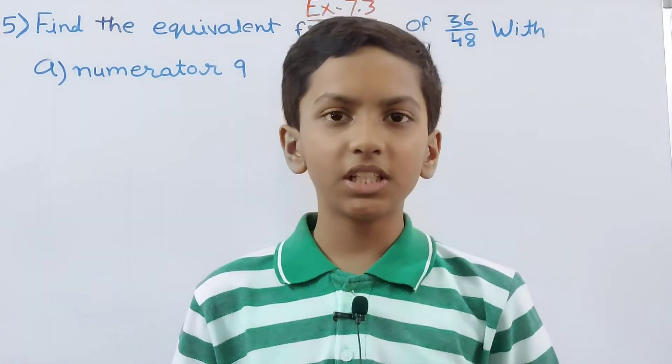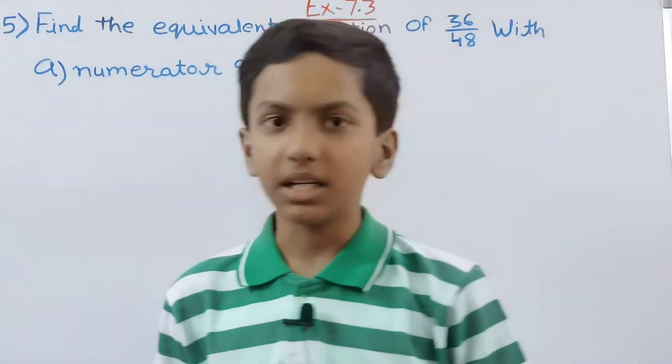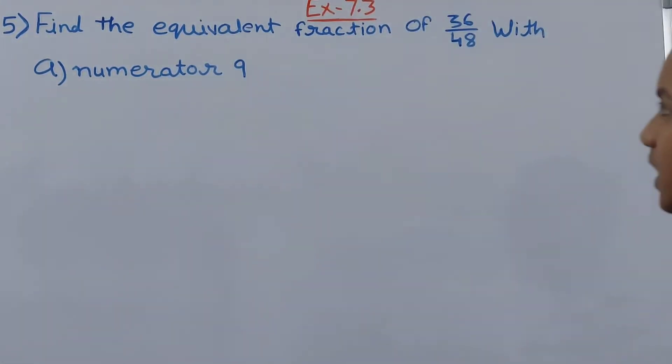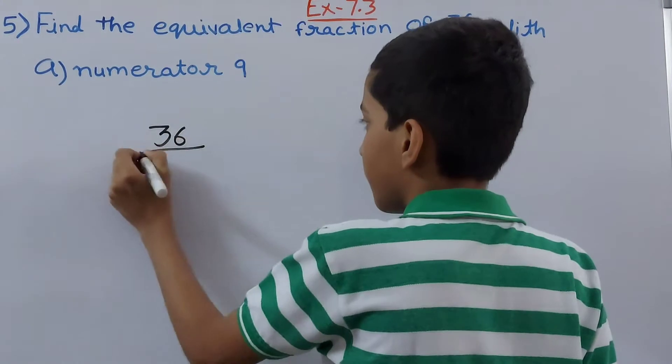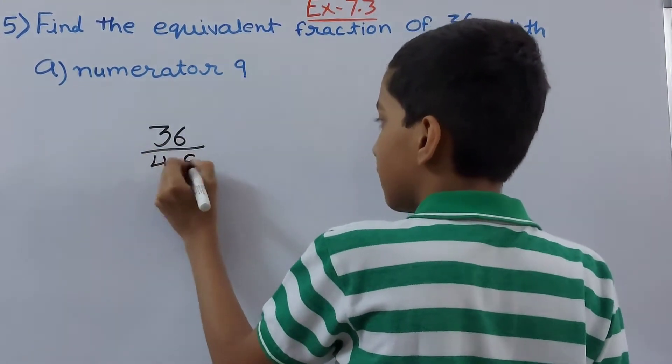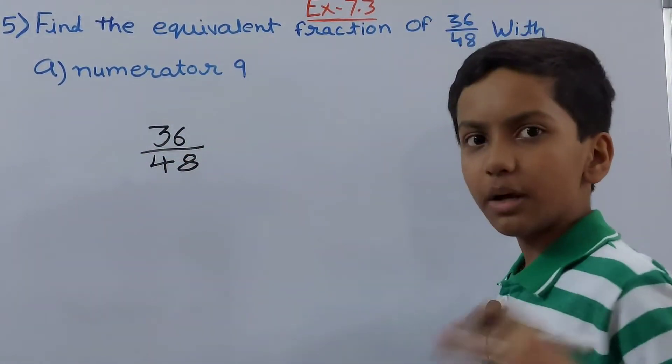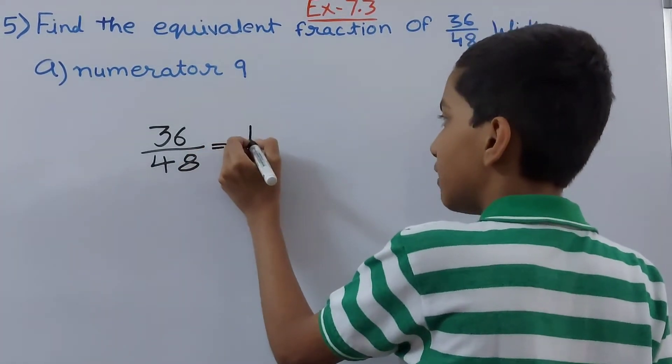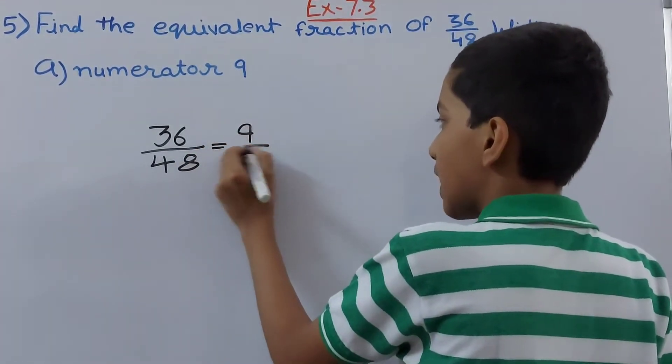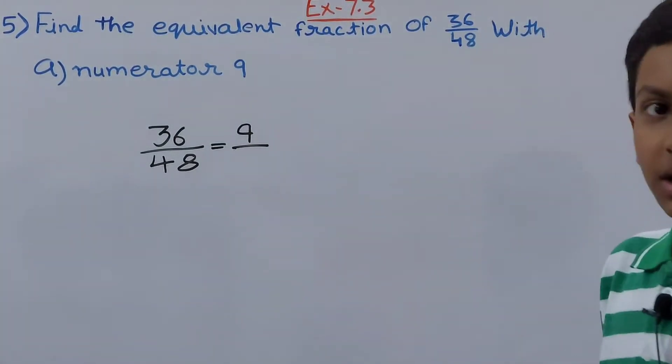Without wasting any time let's get started. This question says find the equivalent fraction of 36 upon 48 with A numerator 9. There is a fraction given to us which is 36 upon 48 and we have to make an equivalent fraction out of it having 9 in the numerator.